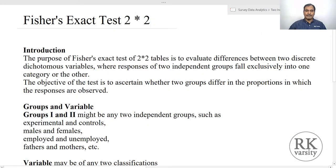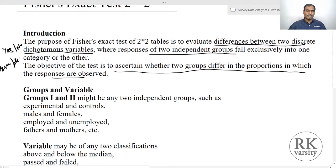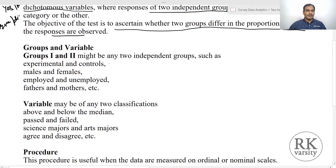Fisher's exact test for two independent samples evaluates the differences between two discrete dichotomous variables. When we say dichotomous, you can say yes or no, agree or disagree — likewise, two mutually exclusive categories. The object of the test is to ascertain whether two groups differ in the proportion in which responses are observed. The groups could be experimental and control groups, males and females, employed and unemployed, fathers and mothers.